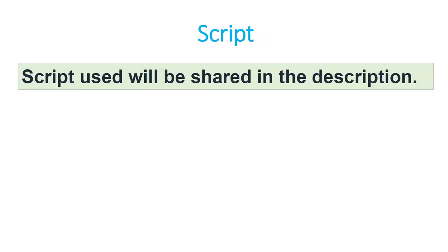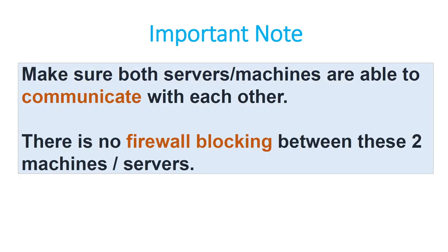The scripts used in this tutorial will be shared in the description — you can find the link there. Before I move on, I want to highlight one important thing: you need to make sure that both the primary and standby Windows machines are able to communicate with each other. Make sure the connectivity between these two machines is fine and there is no firewall blocking between them. The connectivity part is very, very important.